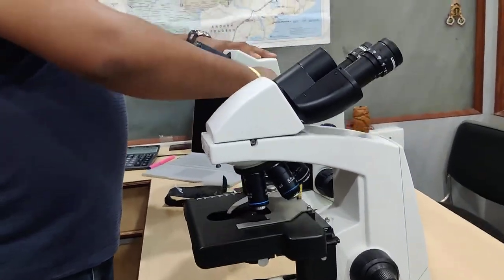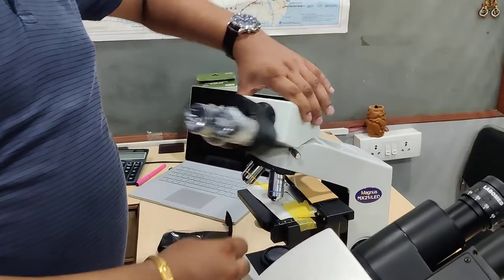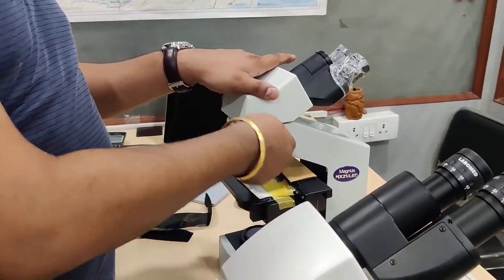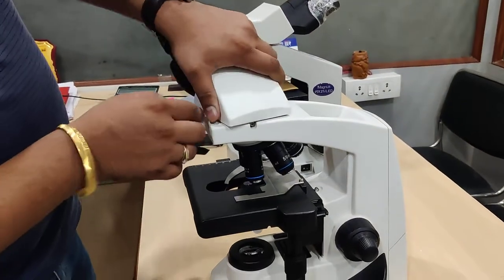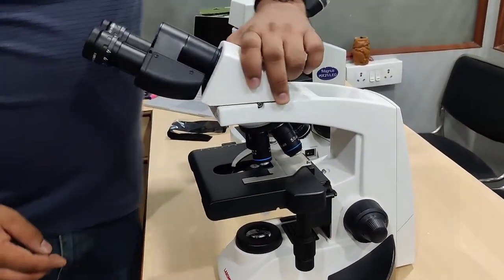In the MX-21i, you get a screw to rotate and tighten the head. Whereas in the Labomid, the movement is on hinges and you get free 360 degree rotation.